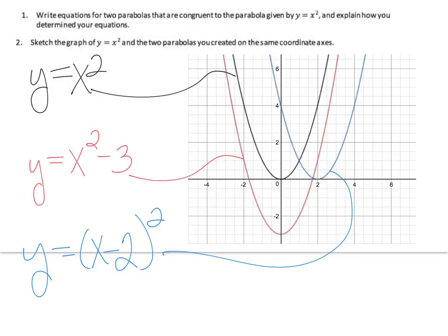The shape is completely the same. The distance between the focus and the directrix — everything else is the same — these are congruent.